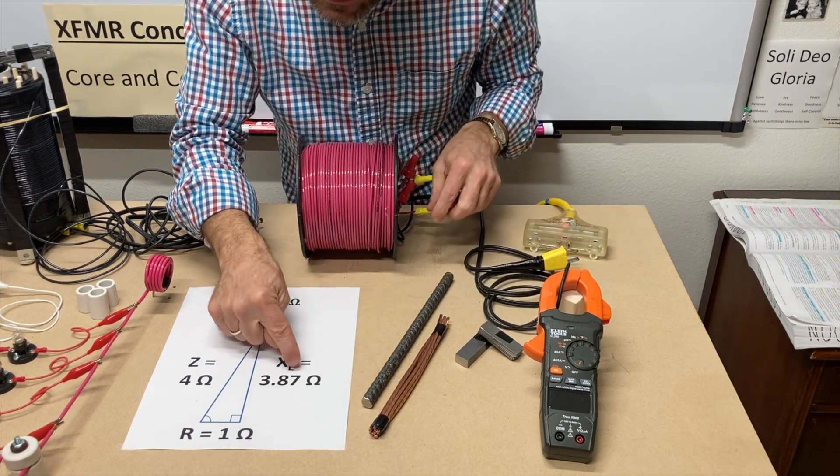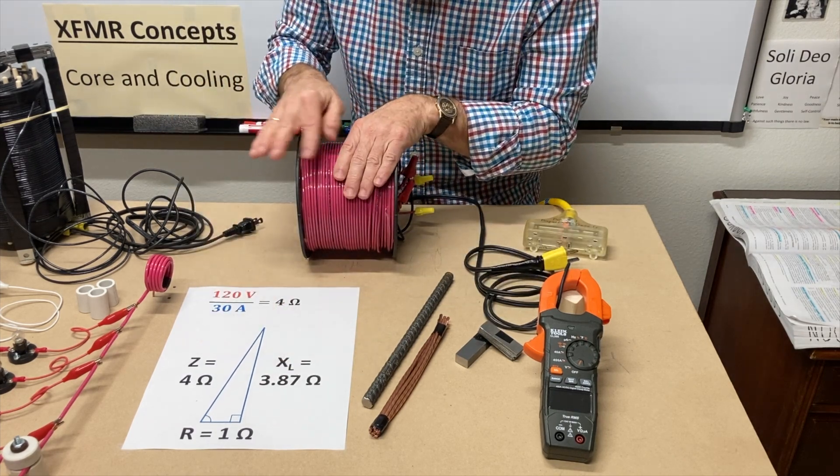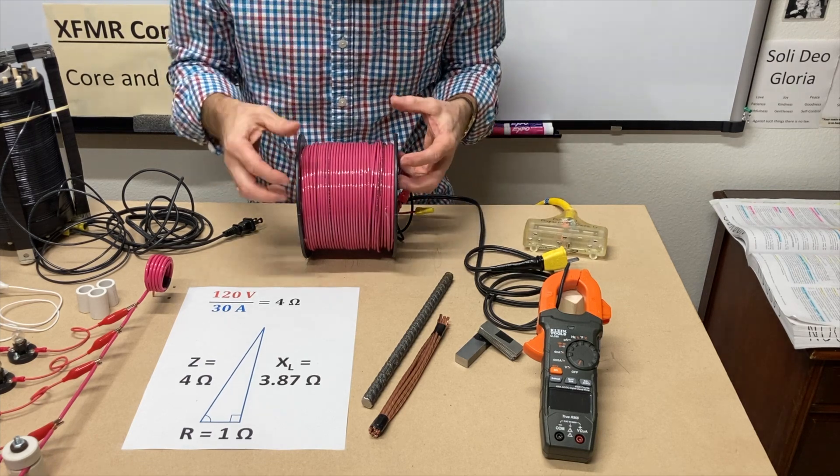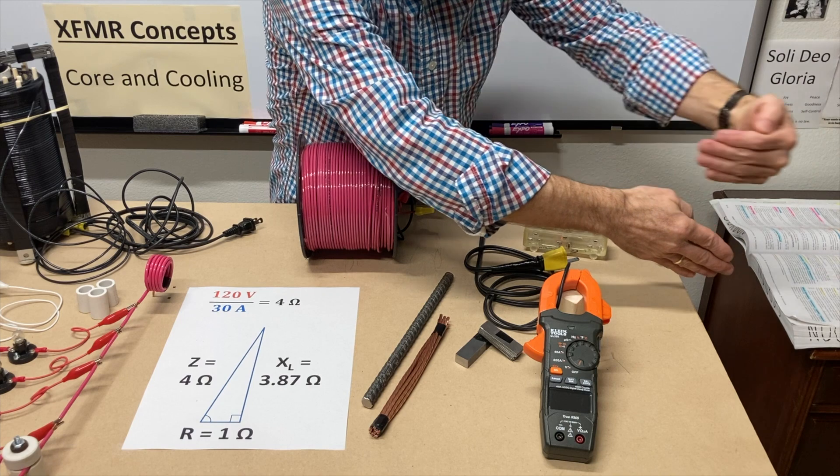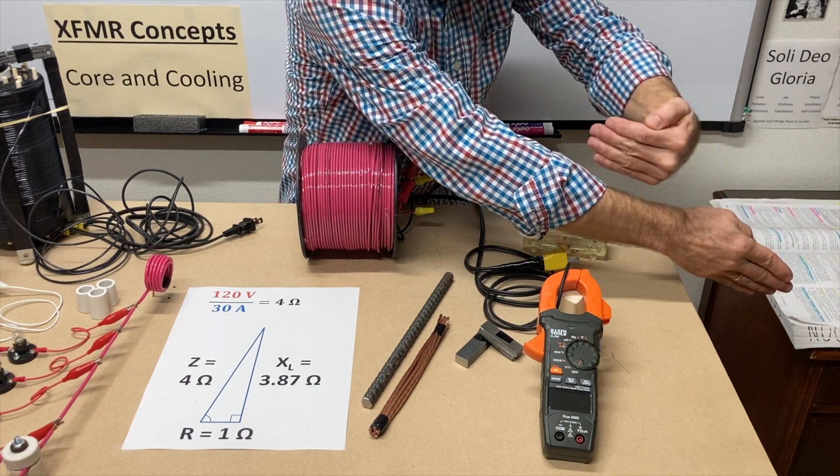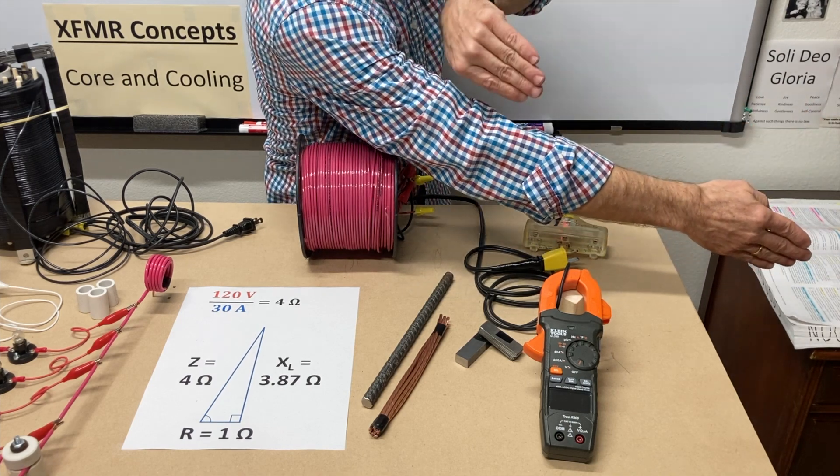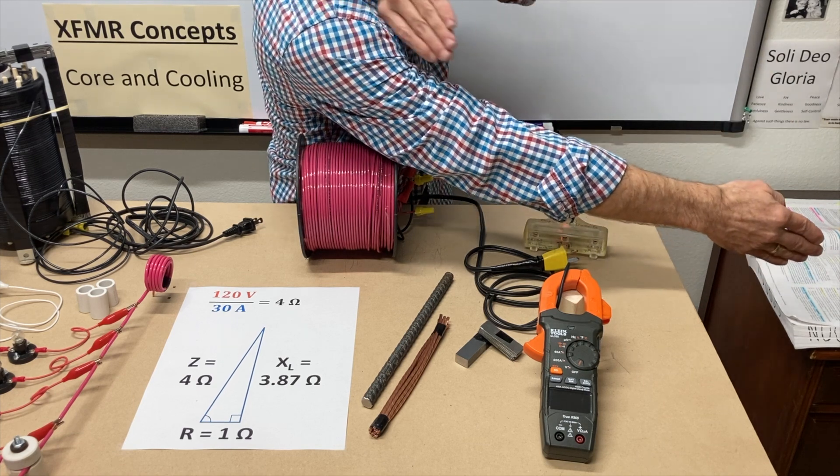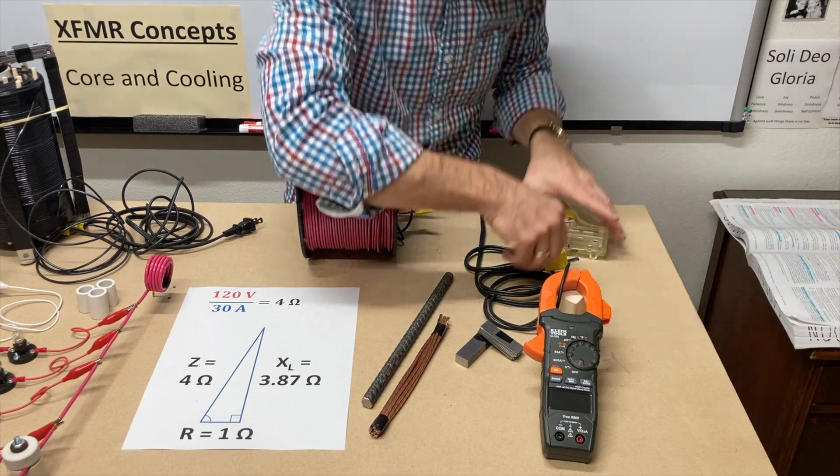And we also know what the inductive reactance is, right? It's that magnetic field around each wire working together and making it stronger so that the voltage induced by that is directly opposing the applied voltage. So it's pushing back, pushing back on the applied voltage. Let's plug it in.